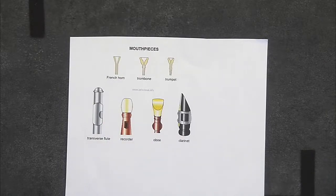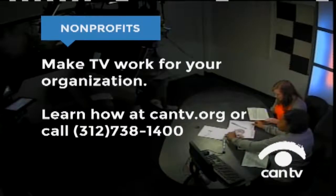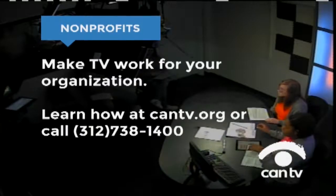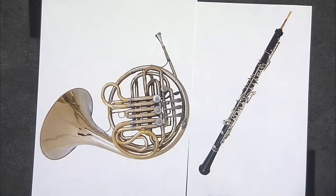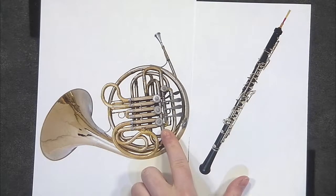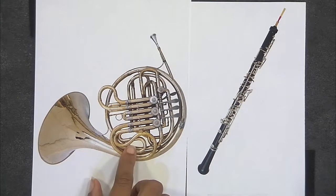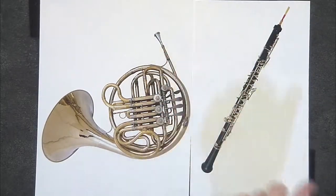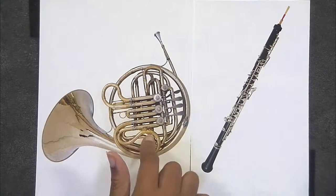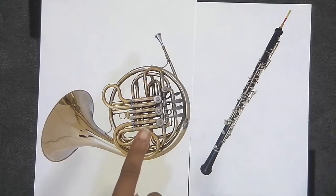Let's compare and contrast the two aerophones, the French horn and the oboe — how are these two instruments alike, and how are they different? Well, this is the French horn, and this is the oboe. They both have valves or keys that are pressed down to change the pitch of sound, and their keys look like they're made of metal. They both have mouthpieces to blow air into them. The obvious difference is their shape. The French horn has a circular shape, and the oboe is straight.